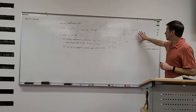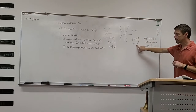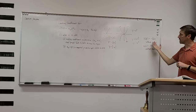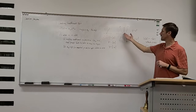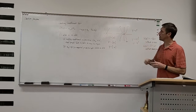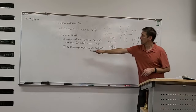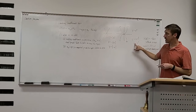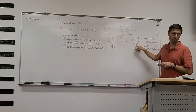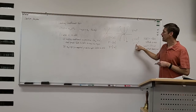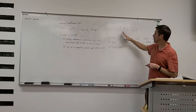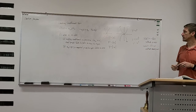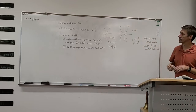We changed the cubic function by putting the negative sign in front, and we know that makes it reflect around the x-axis — flipped like this. Sure enough, what our statement said is true: a sub n is negative one instead of positive one, and so it rises to the left and falls to the right.